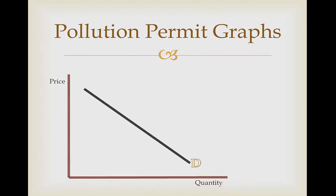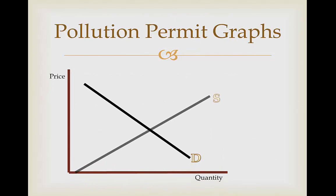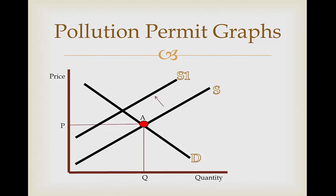So how does this look on a graph? Here we have a basic supply and demand graph at our equilibrium. A pollution permit is going to increase the cost of production because the amount of pollution is going to be limited. This is indicated by a shift in supply — since firms can't produce as many goods, supply is going to decrease.